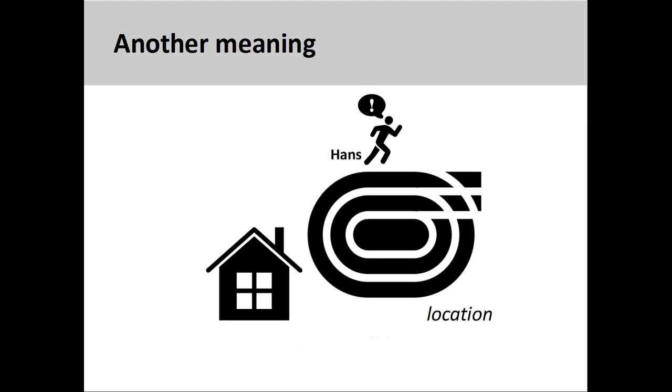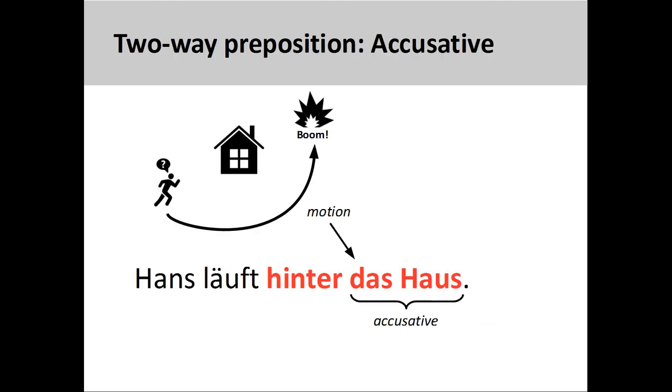In English, both sentences would require more information to make the meaning clear. In German, the object of a two-way preposition makes the meaning clear. If the object is in the accusative case, motion is indicated. Position is indicated if the object is in the dative case.